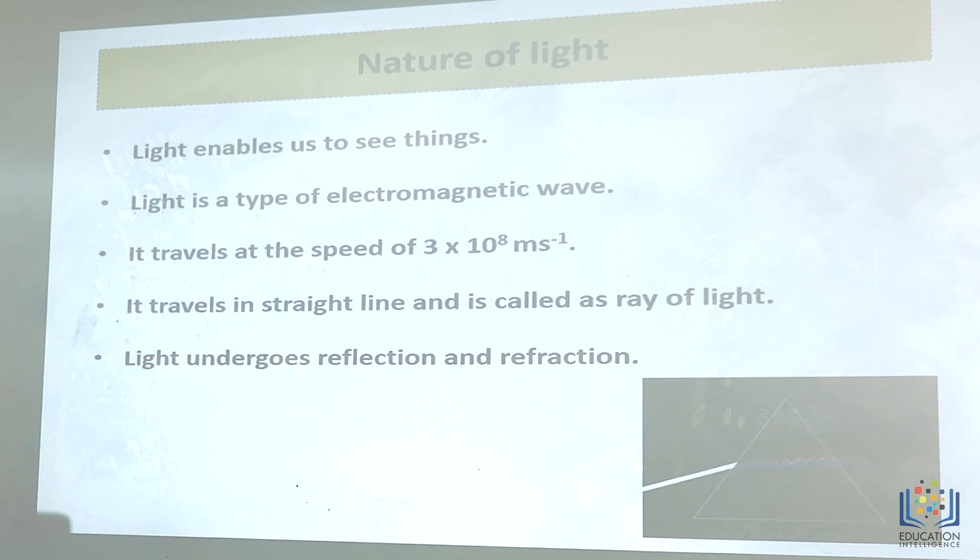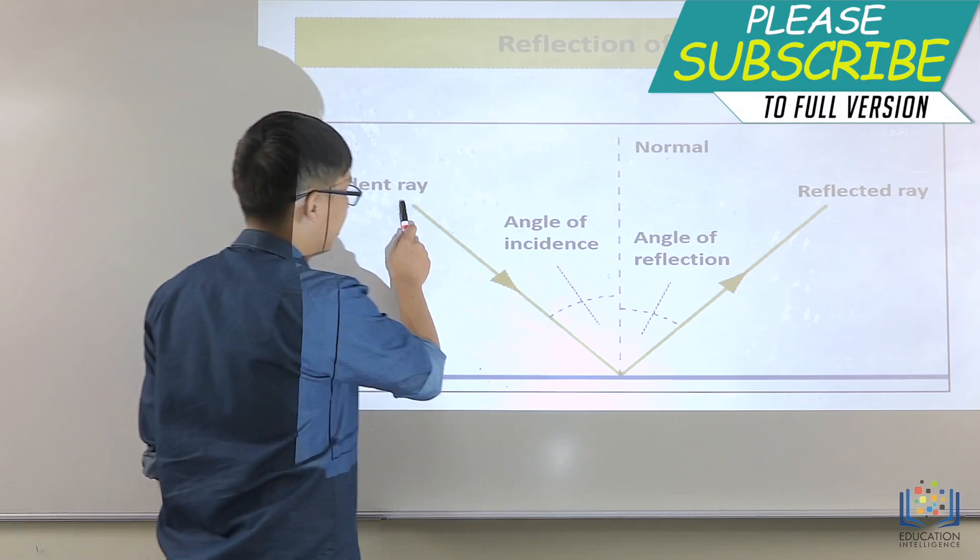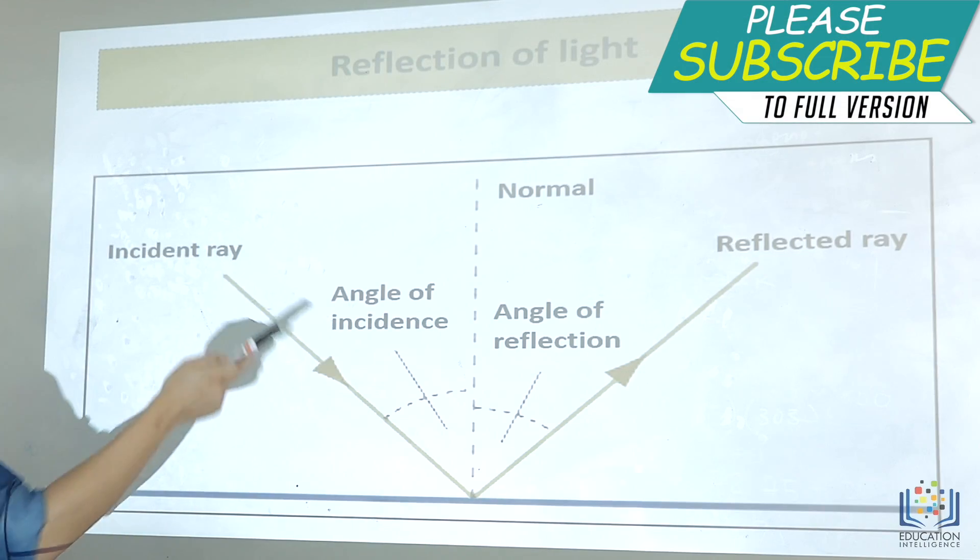First thing here is that light enables us to see things, reflection of light. So this is actually a beam of light, or ray of light, light ray.